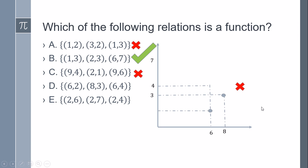The last one, option E, has (2,6) and (2,7). This is not a function again because 2 has more than one value in the range.